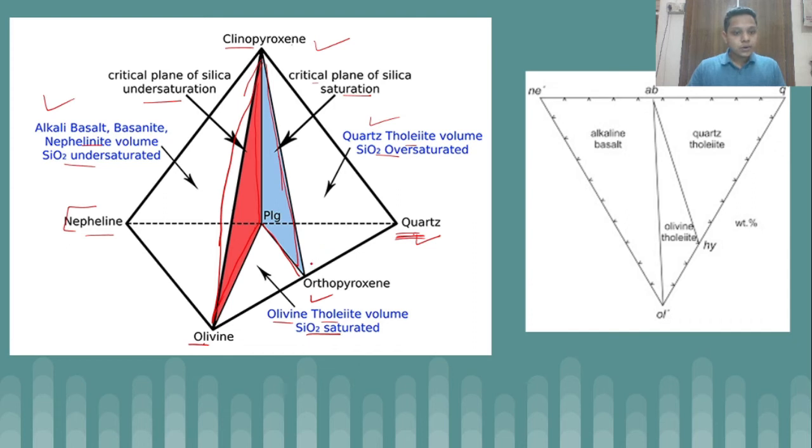Important thing to note from this tetrahedron is the base of this tetrahedron, which is this nepheline-plagioclase-quartz and olivine phase. I have projected from clinopyroxene and shown over here this plane. This nepheline-quartz-olivine plane has this line joining olivine and albite, which is a very important line because somewhere parallel to this line exists a thermal divide.